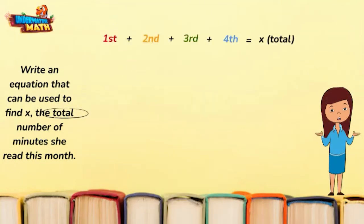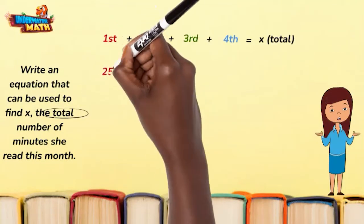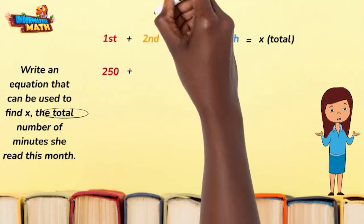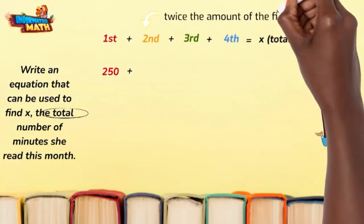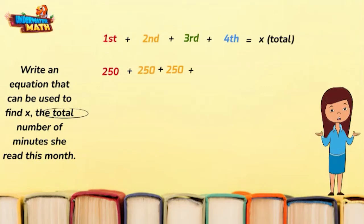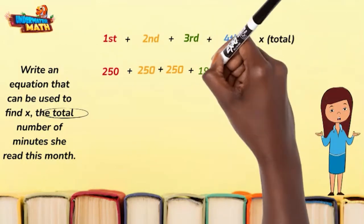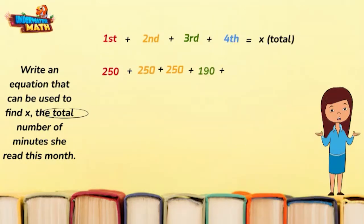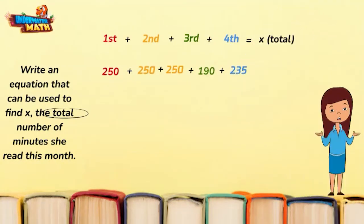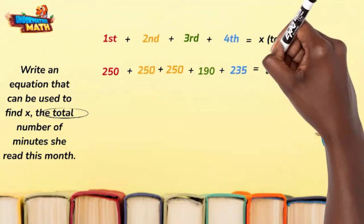The first week was 250. The second week was twice that amount, so that is two groups of 250. The third was 190 and the fourth was 235. We make the sum equal to x, which represents our total number of minutes.